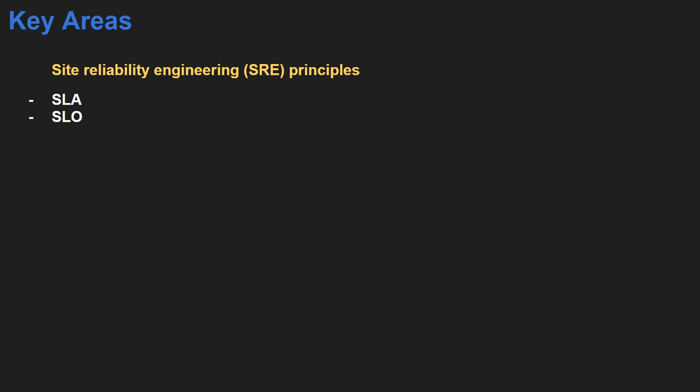I'm not going deep into each concept — I'm just introducing what all things you have to prepare. Then you have SLI to measure your SLA and SLO. SLI includes availability, durability, or latency of your application — these are the key service level indicators that are useful to determine the overall performance of your application.